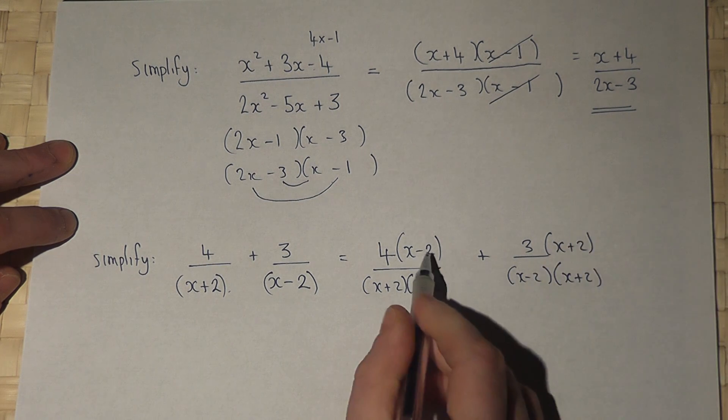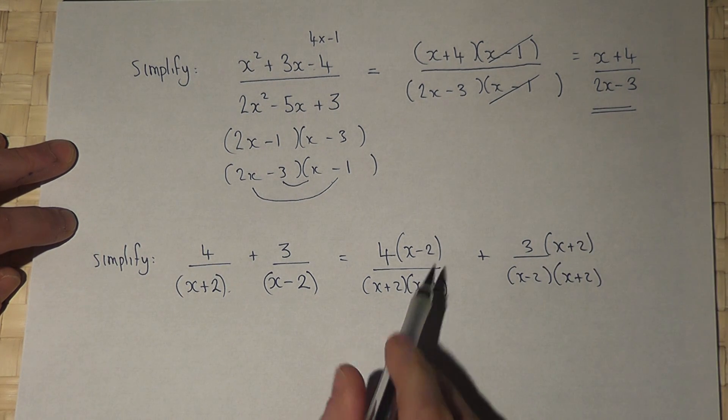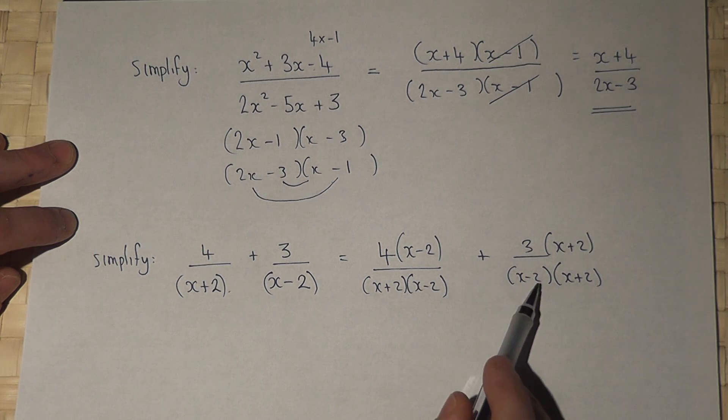Because I've times the top and the bottom, I've not changed the fractions. But I've now got the same denominator in both fractions.